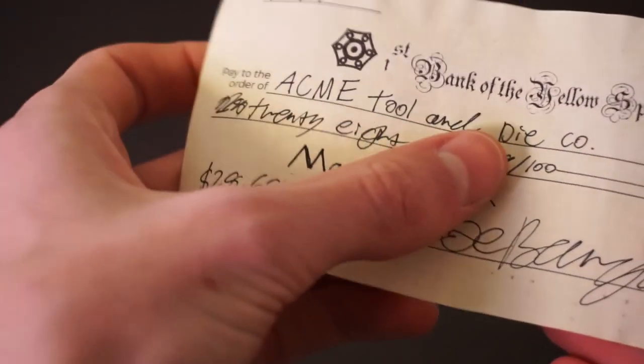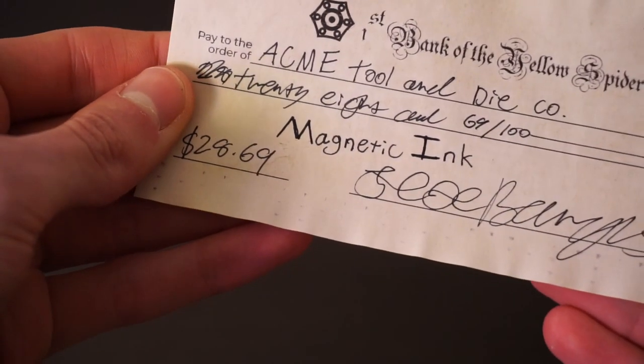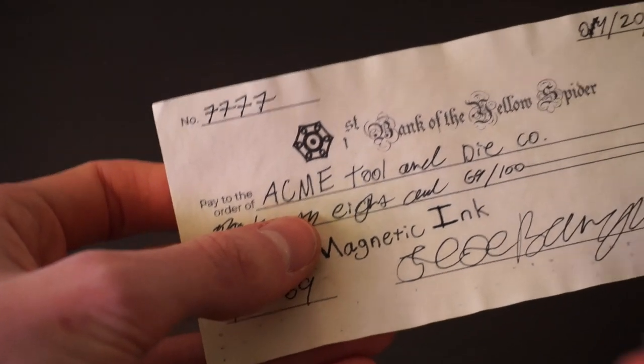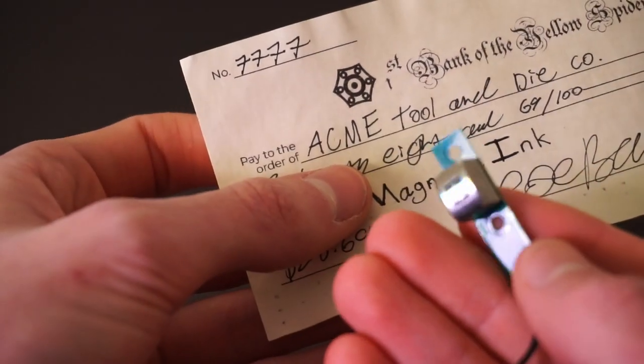So they turned to magnetic ink, which when printed on a check and magnetized could be read using a pickup not unlike those found in a tape recorder. The ink was durable, cheap, and it solved the problem of stray marks and stamps. It could be read right through them.